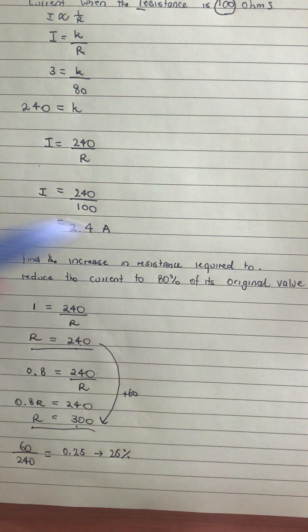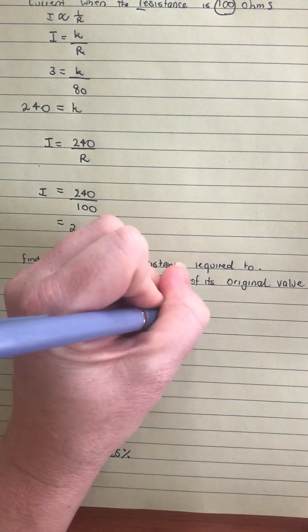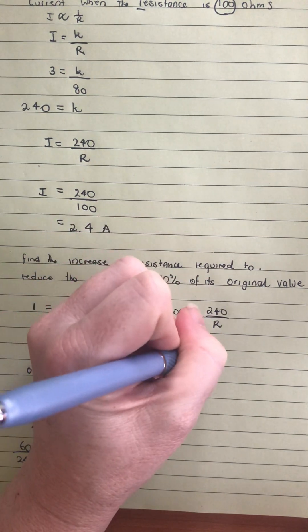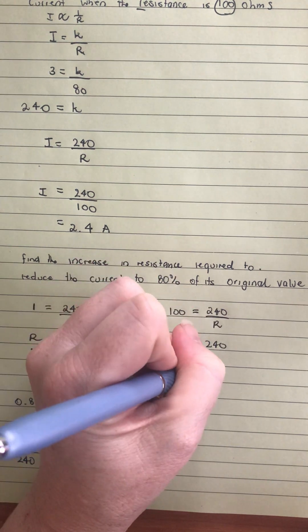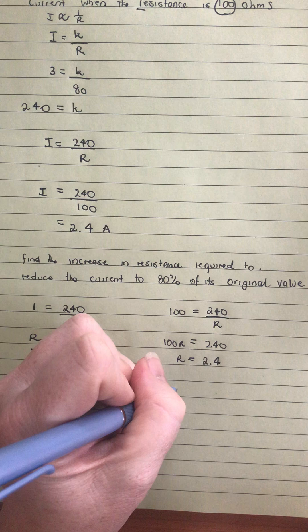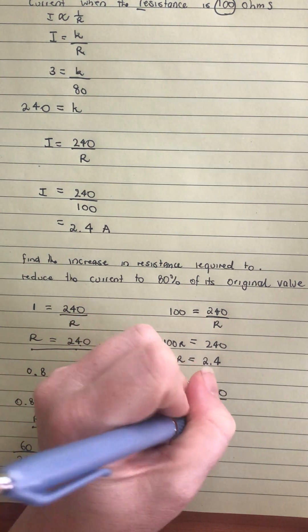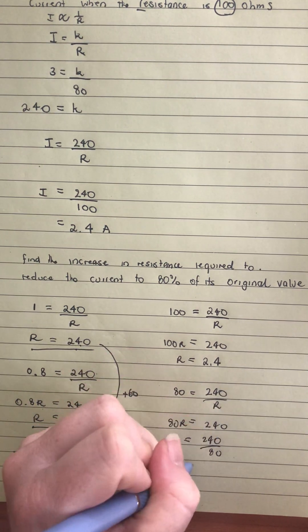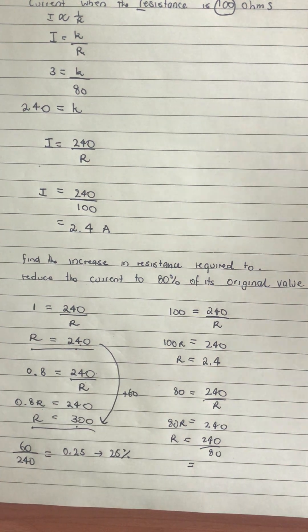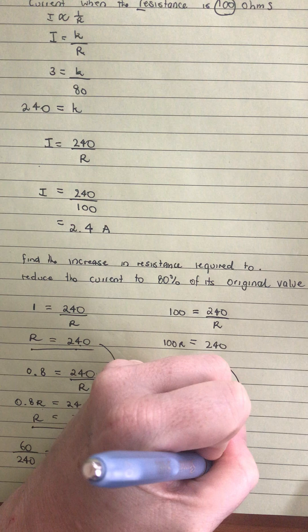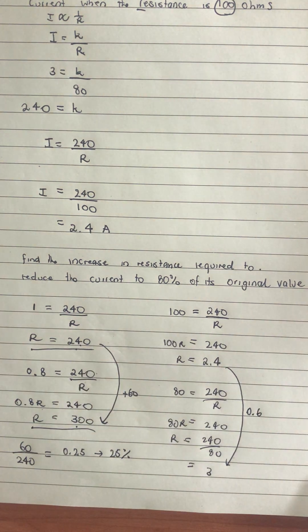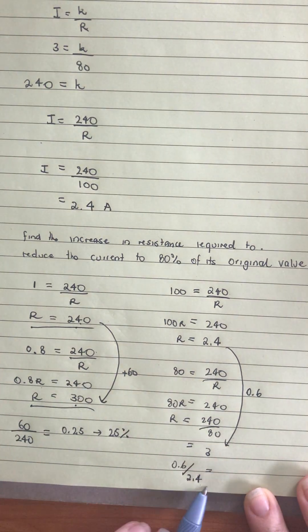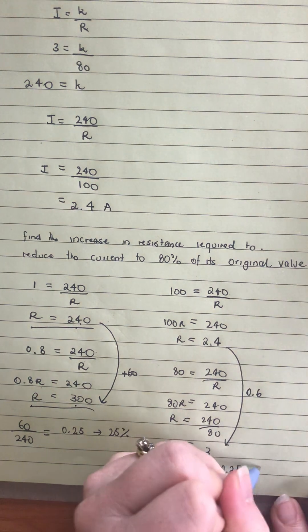As I said, we could have gone with the 100. Having a look how that would work, we would put the 100 there. We would have 240 over r, so then that would be 100r is 240, r is going to be 2.4. And then we would do the 80, and go 80 is equal to 240 on r. 80r is equal to 240. r is equal to 240 over 80. And we would get 3. So then we can see that that has increased by 0.6. And then we would do 0.6 over 2.4, which was the original. And see how we've got that same fraction, 0.25, which is the 25%.